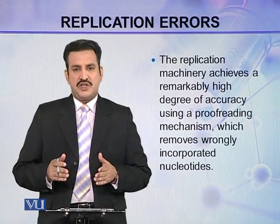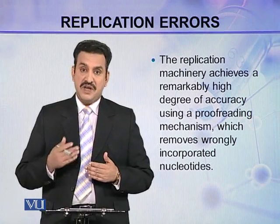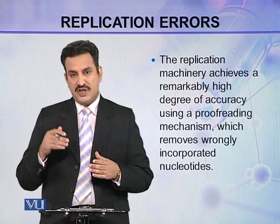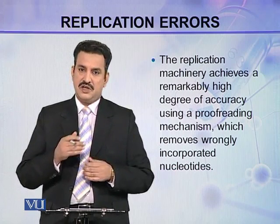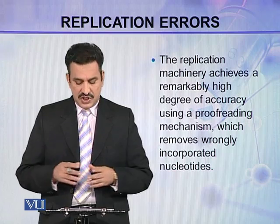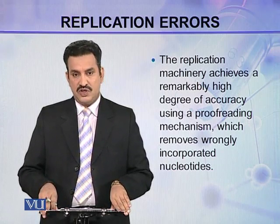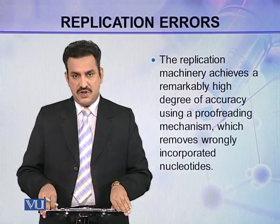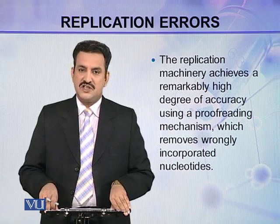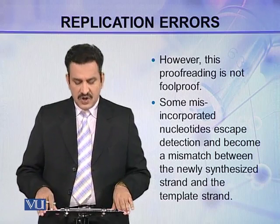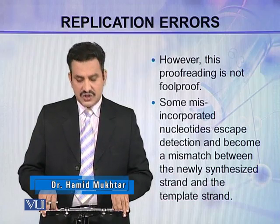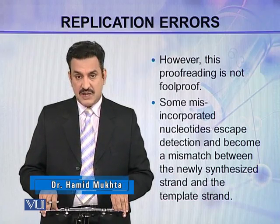Replication is a very intricate process and there are many chances of a mistake. Sometimes wrong nucleotides are incorporated in the new strand. The replication machinery achieves a remarkably high degree of accuracy using a proofreading mechanism, which removes wrongly incorporated nucleotides. However, this proofreading is not foolproof — some misincorporated nucleotides escape detection.